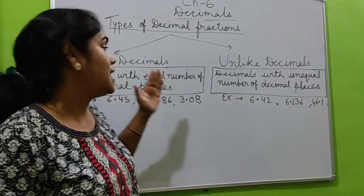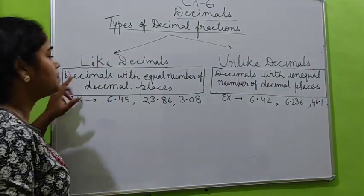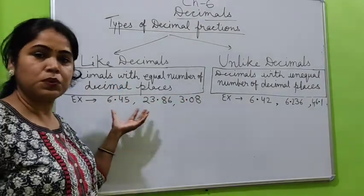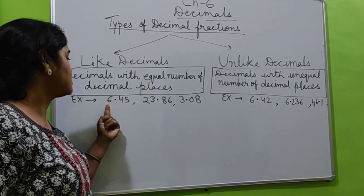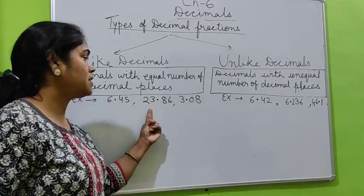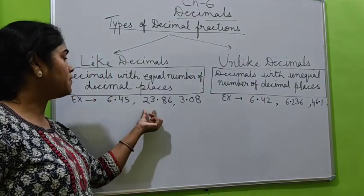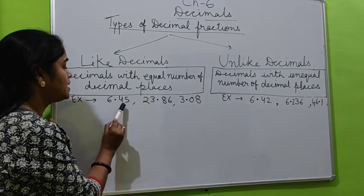First is like decimals, in which we observe that decimals with equal number of decimal places. Here we have given you three examples. Here 6 is whole part, 23 is whole part, here 3 is whole part. Here the number of places is different, but check in decimal part.